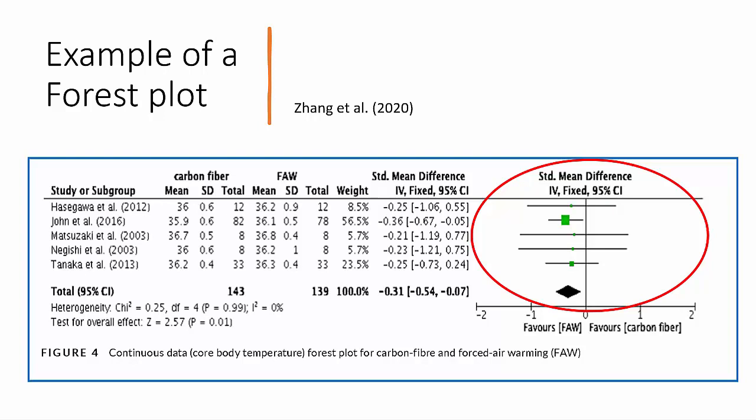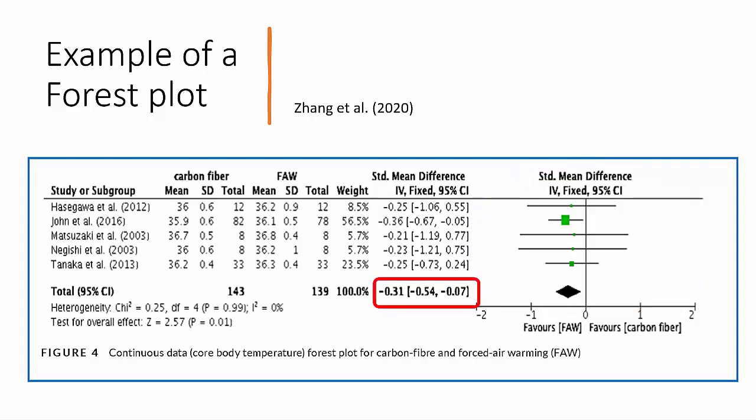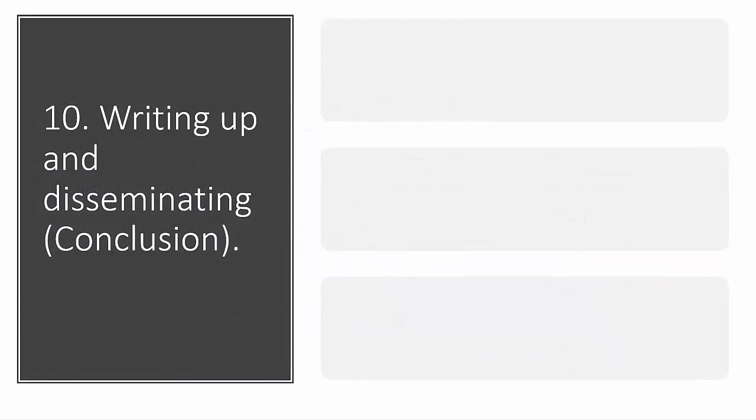We are also given the overall pooled — i.e. combined — value of the measure along with its 95% confidence interval. This combined value is traditionally given as a diamond in the forest plot, which simultaneously gives the mean value plus its width as an expression of the 95% confidence interval. There is more information given in this plot, but I will be saying more about this in future videos. Okay, step ten, the final step.